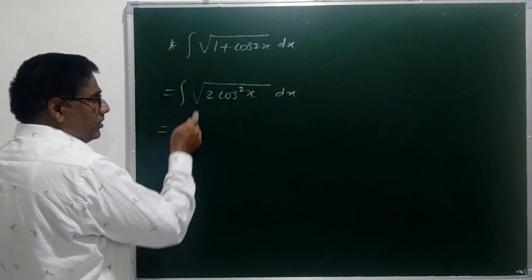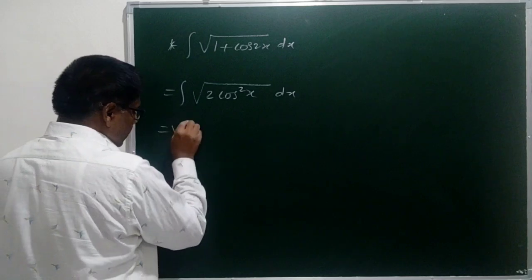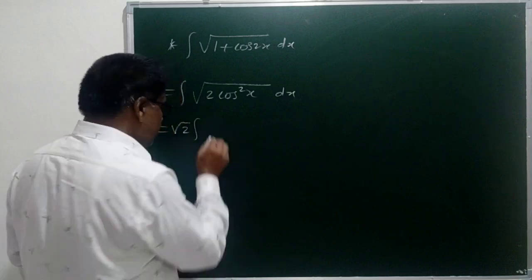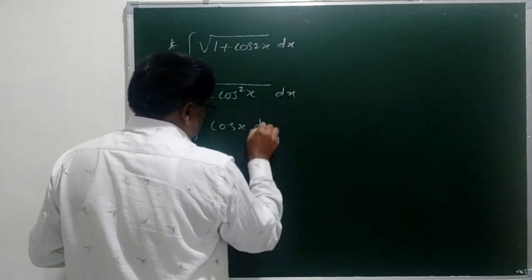This is equal to root 2 constant. It can be taken outside the integral. Root 2 into square root cos square x is just cos x dx.